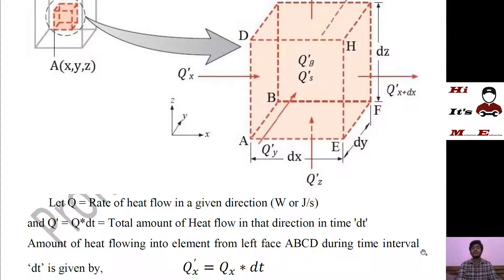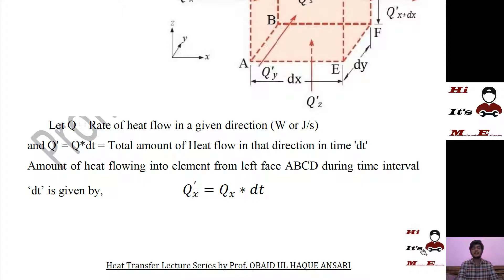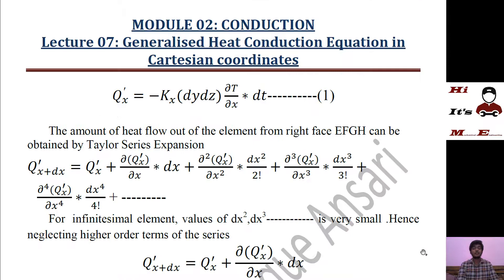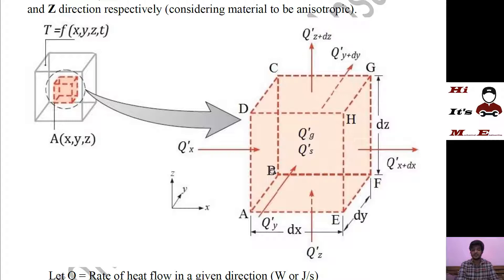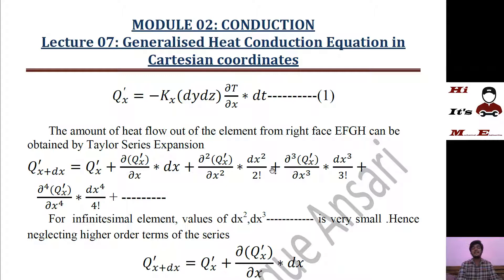The mode here is conduction, so the rate of heat transfer is described by Fourier's law: Q = −kA(dT/dx). Since we are calculating heat transfer along the x direction, we consider thermal conductivity along x direction kx. We get Q'x = −kx · dy · dz · (∂T/∂x) · dt, where dy·dz is the area of face abcd. We take the partial derivative of temperature with respect to x and multiply by time to get the total amount of heat entering through face abcd in time interval dt.